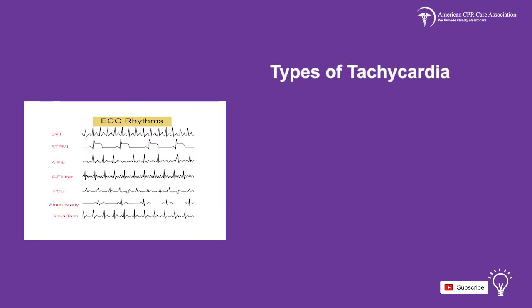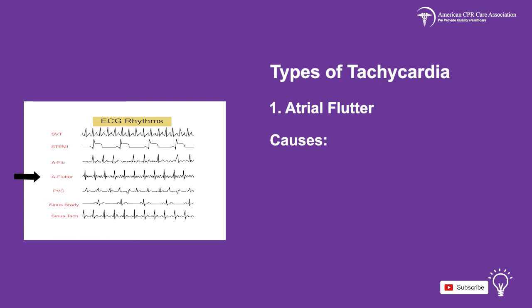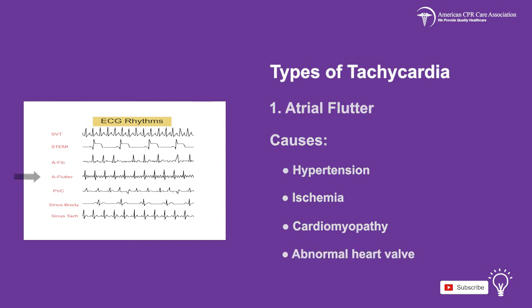There are five different types of tachycardia that we will look at. The first type is atrial flutter, which is an abnormal heart rhythm causing a fast, irregular heartbeat. It usually occurs in the atria of the heart, but this type of arrhythmia is uncommon in children. Some causes of atrial flutter include hypertension, ischemia, cardiomyopathy, or an abnormal heart valve.